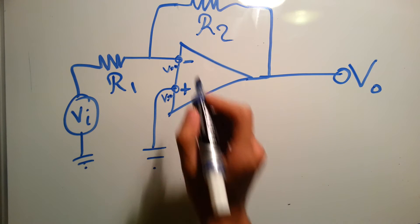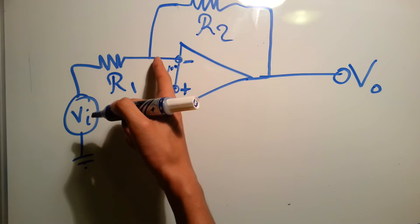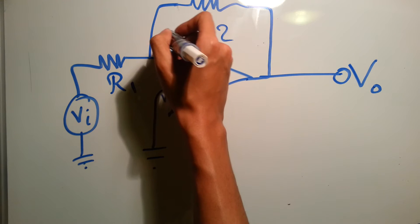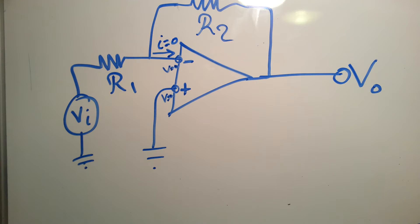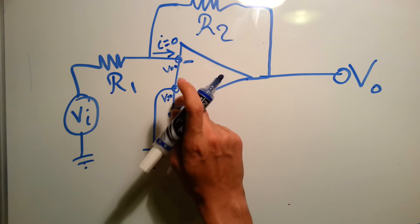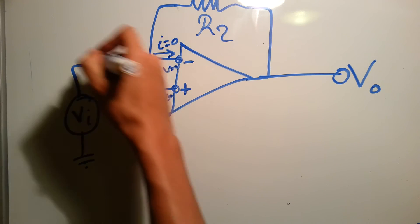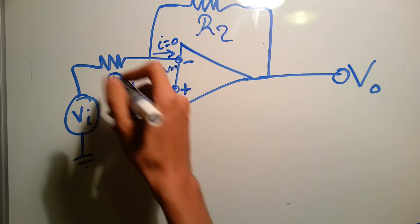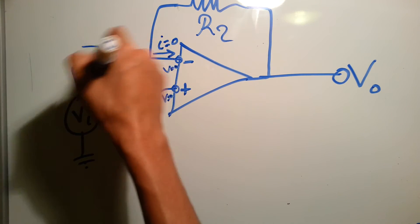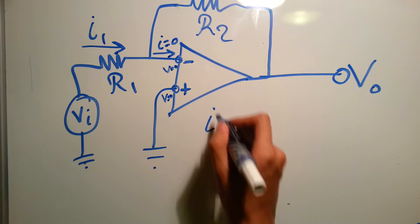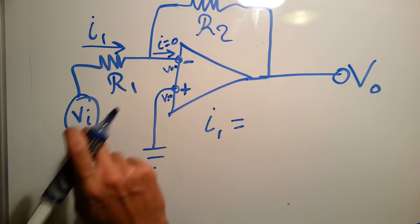And you should also know that since this is all one node, then the current in this branch equals 0. So let's do the math. Since this one equals 0 and this one equals 0, then there must be a current that's passing only through this branch. This current from this part, let's call it I1.